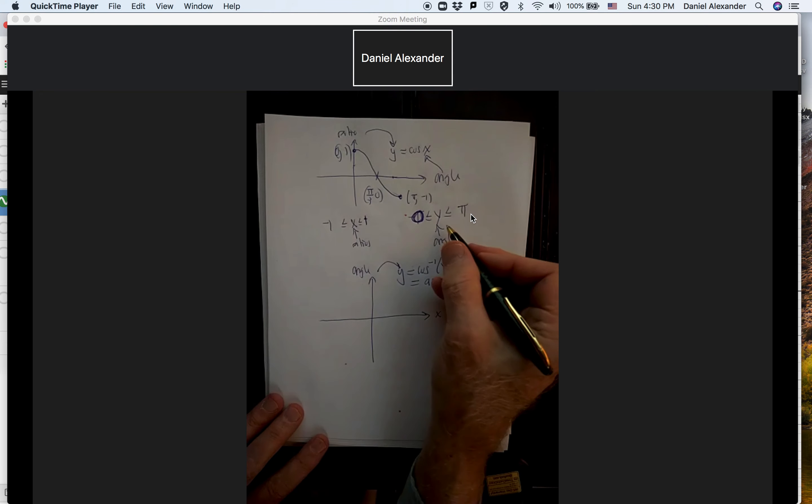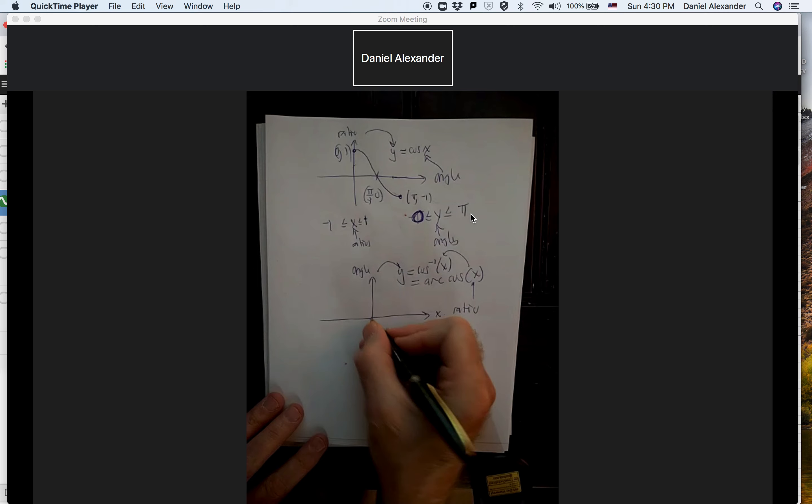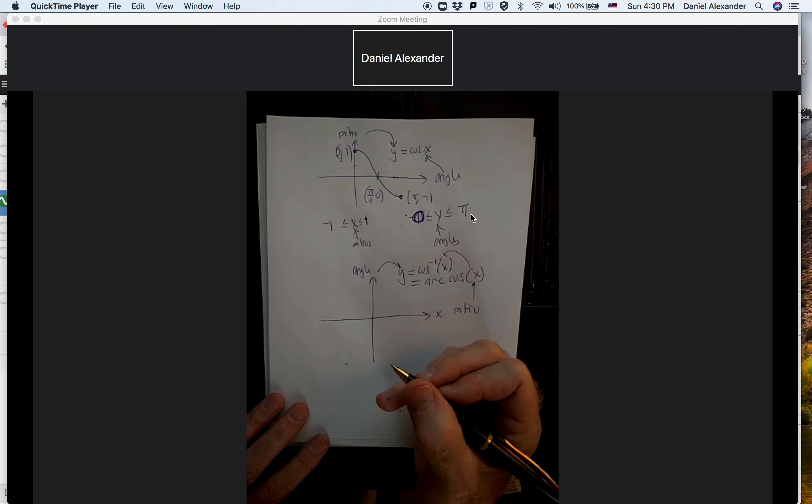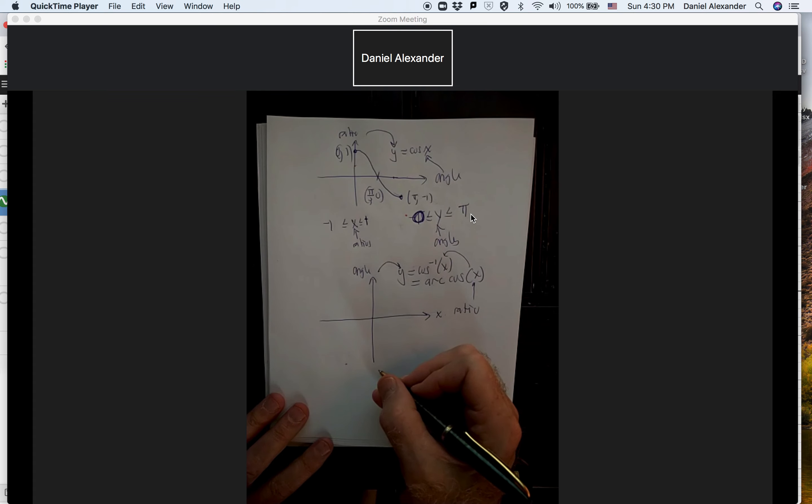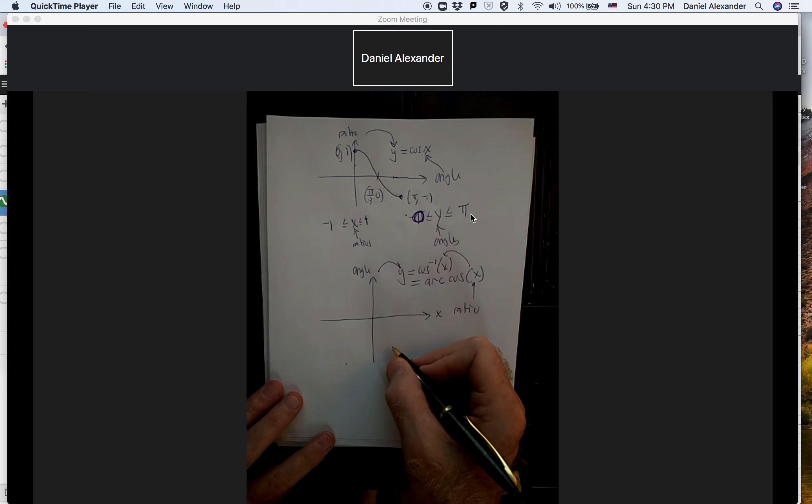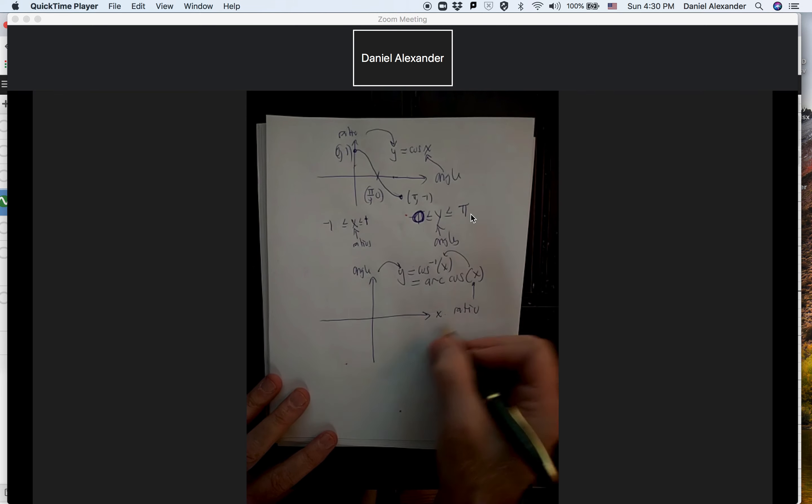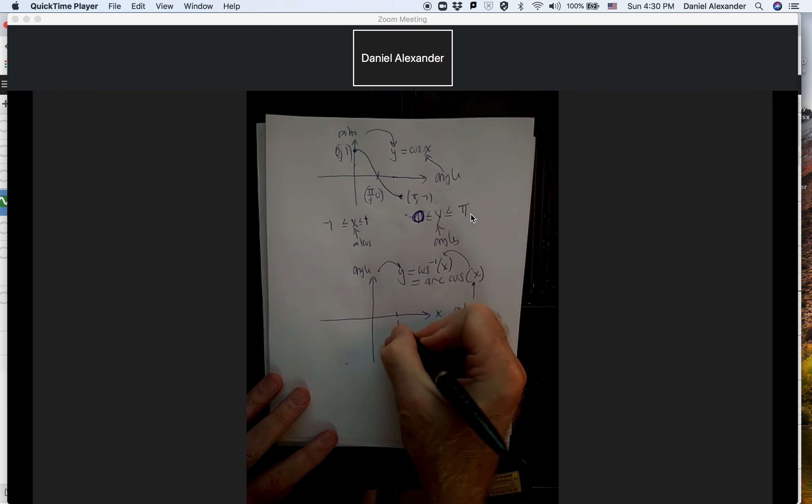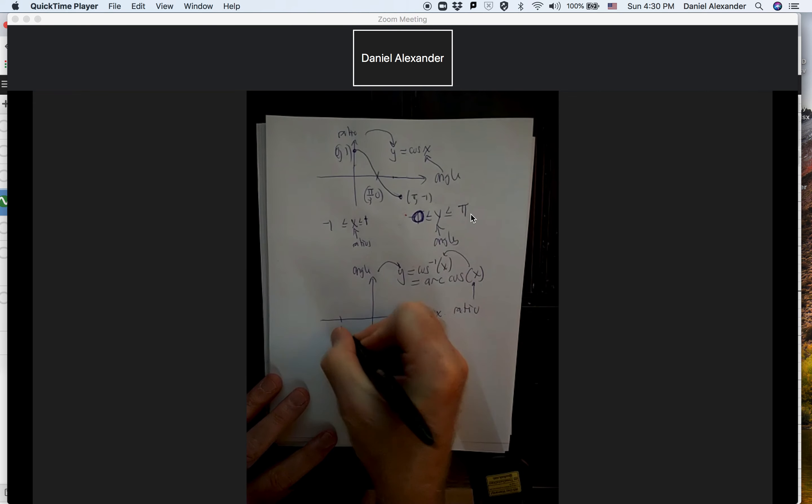So remember, our angles go between zero and pi. And then our ratios go between minus one and one. So let's try to get a sense of what the graph looks like. Our ratios, one and minus one.